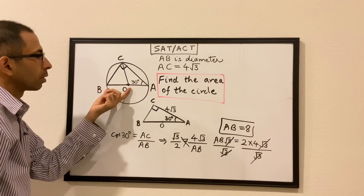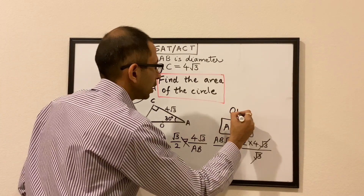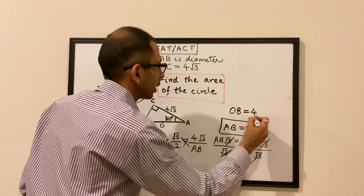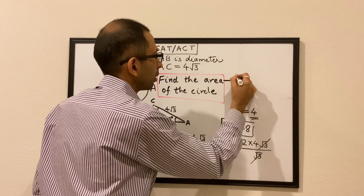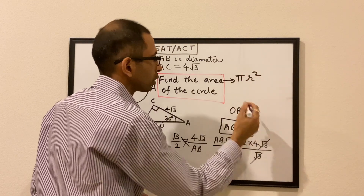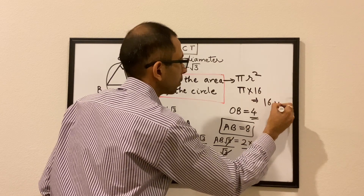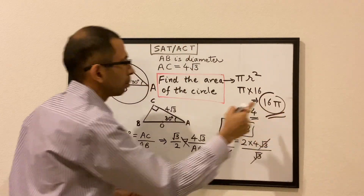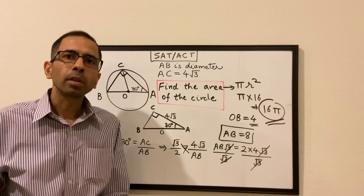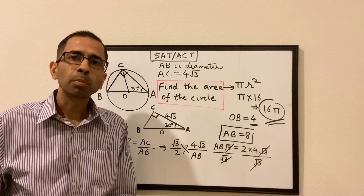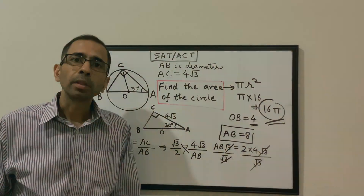We found the diameter AB equals 8, hence the radius is 4 — since the radius is half the diameter, OB equals 4. Once we have the radius, area equals pi r squared. With r equal to 4, area equals pi times 16, or 16 pi. So 16 pi is the area of this circle. If you have any questions, please reach out to us at info.mathletes@gmail.com. See you in the next session.